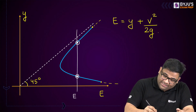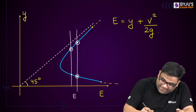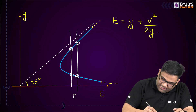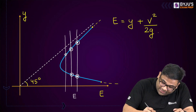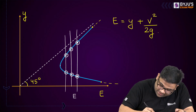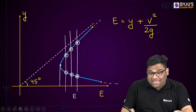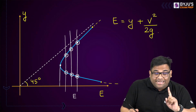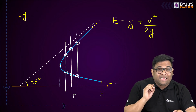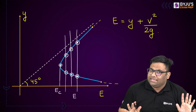If we decrease the specific energy, the gap between the alternate depths is decreasing. For a particular specific energy, there is only one depth, and that particular depth is known as critical depth. The flow condition here is known as critical flow. At critical flow condition, the specific energy is minimum and there is no alternate depth — there is only one depth, that is the critical depth.